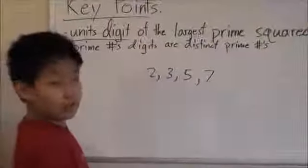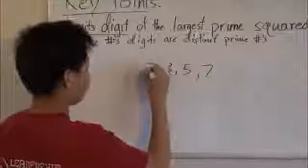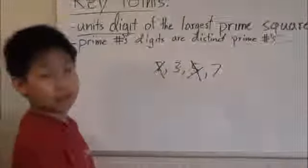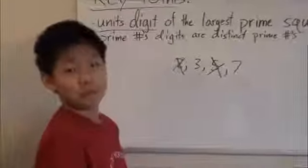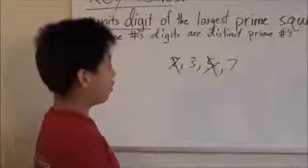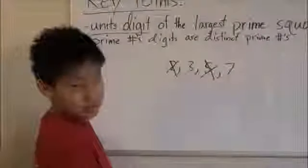So we know that the unit's digit cannot be 2 or 5 because if it was 2 that means it would be divisible by 2 and if it was 5 that means it would be divisible by 5. So then that would mean it isn't a prime number.